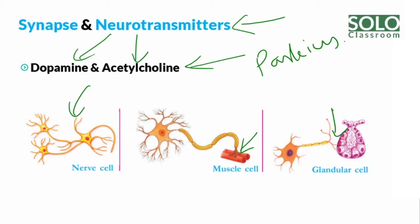There are three possibilities: in between nerve cells with motor neurons, in between nerve and muscle cells, and in between nerve and glandular cells. So nerve cells, muscle cells, and glandular cells — the whole connection is the synapse.